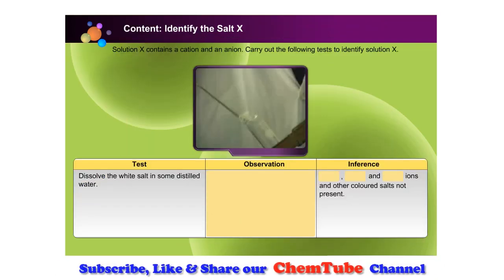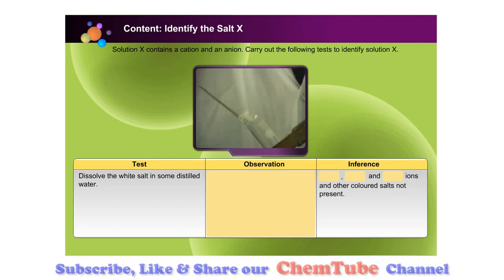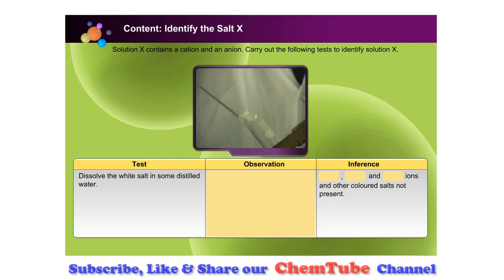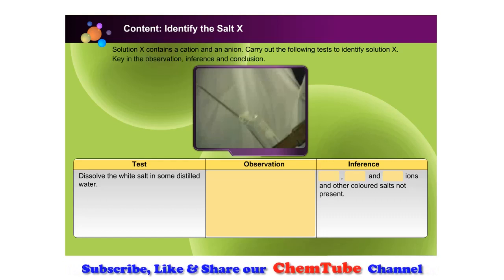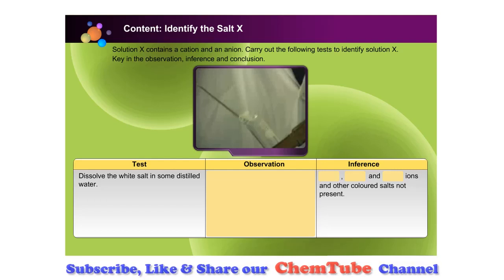Salt X contains a cation and an anion. Carry out the following tests to identify Salt X. Key in the observation and inference in the table, and finally the conclusion in the space provided.